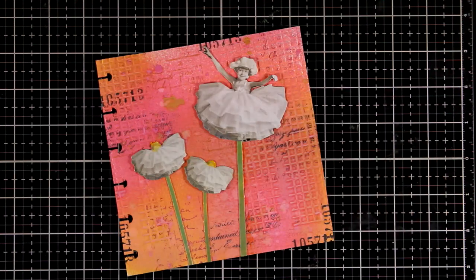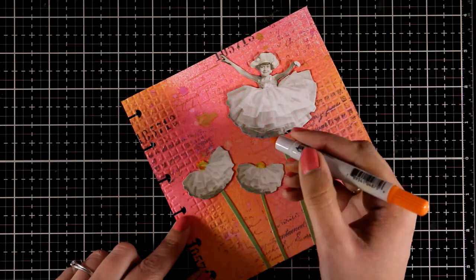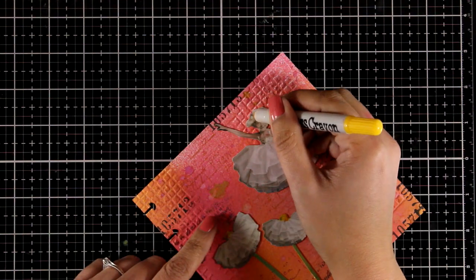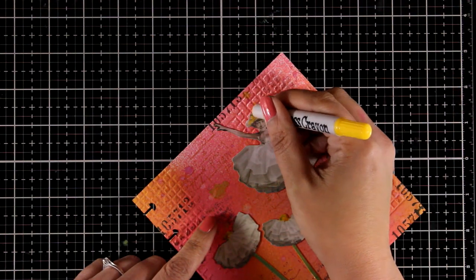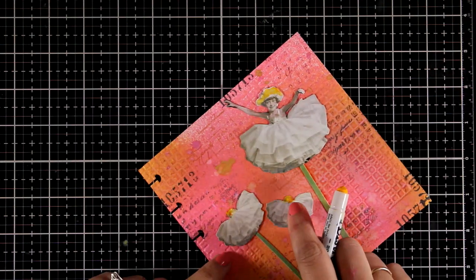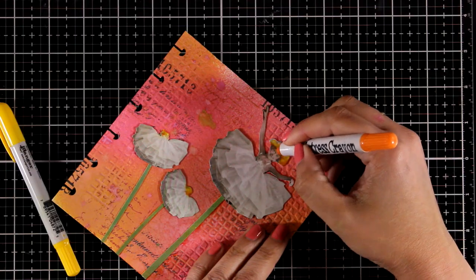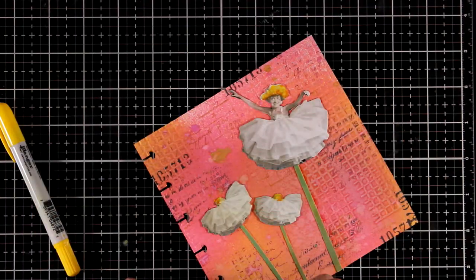You can also blend it out with your fingers if you want to, and I'm also going to add a little bit of shading with my orange Distress crayon. Then I'm going to use again those two colors at the heart of the little girl as if this is the center of the flower and she's popping from inside.